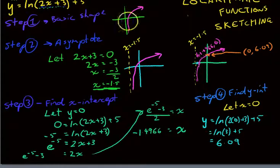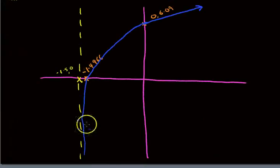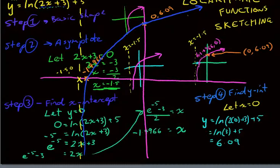Make sure that when, once you've done it all, you don't have to draw it as the sketch at each step of the way. That was just me explaining it. But once you know what the basic shape is, the asymptote, the x-intercept, and the y-intercept, make sure that you sketch something fairly neat, something that looks a little bit like that. That is sketching logarithmic functions. Thanks.